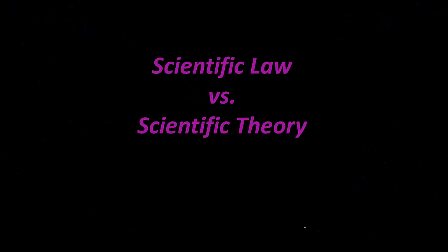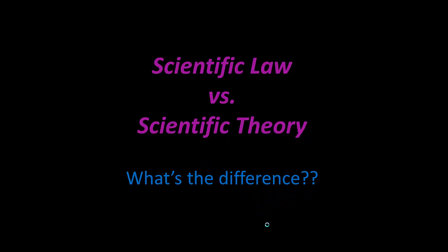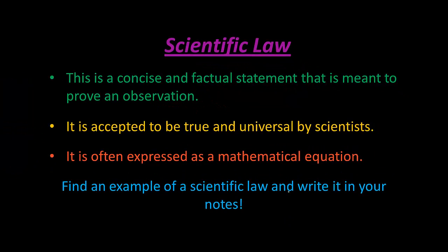Now let's talk about scientific law versus scientific theory. A scientific law is a concise factual statement meant to describe an observation. It's accepted to be true by all scientists and is often expressed as a mathematical equation. Think of an example of a scientific law and write it in your notes — remember, often but not always expressed as a mathematical equation.